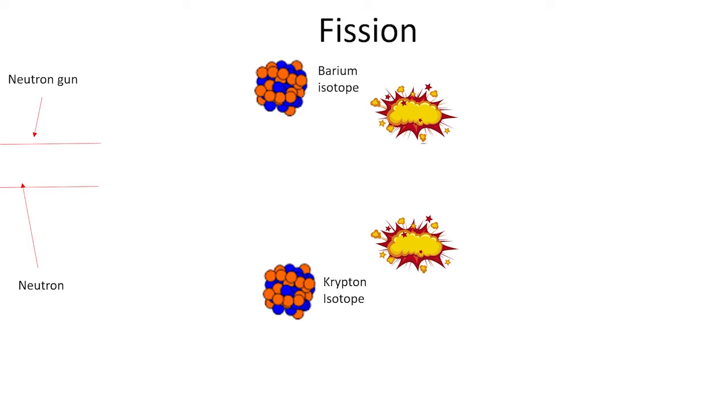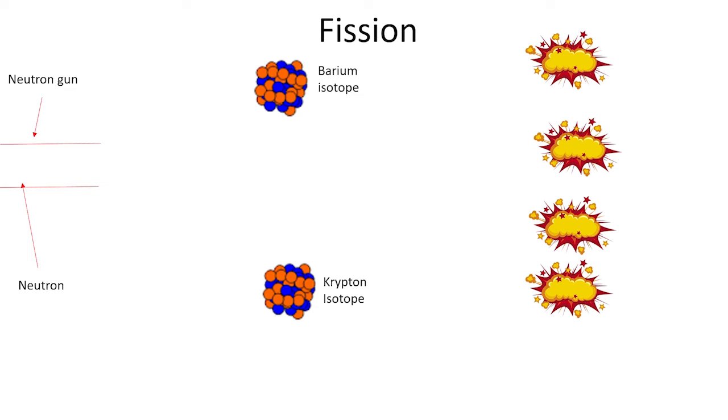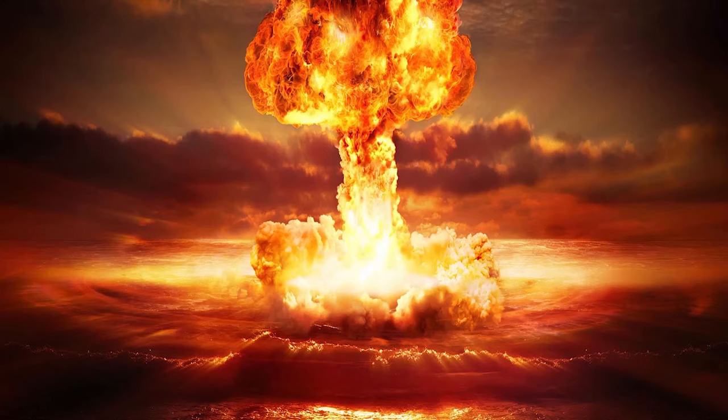Yet the uranium atom also releases two to three neutrons. These neutrons can hit other uranium atoms and cause a chain reaction. To control this, only one to two neutrons can be emitted per split. If this is not controlled, you have a nuclear bomb.